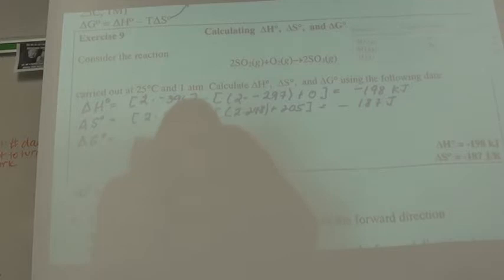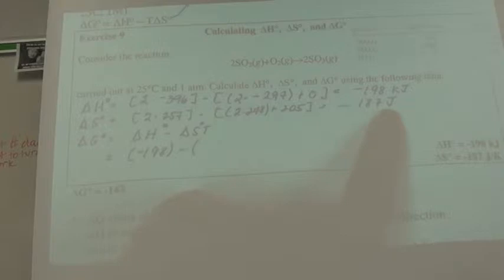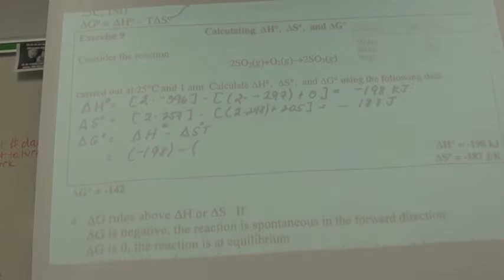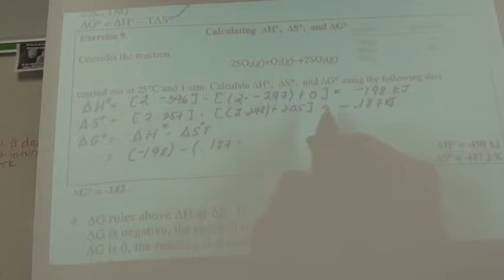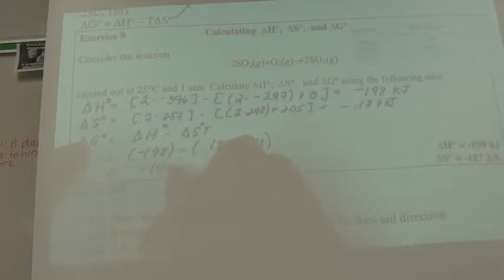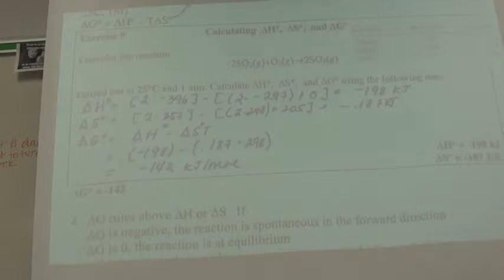And now it asks me to calculate delta G. Delta G is equal to delta H minus T delta S. So I have a negative 198 minus my delta S. And I notice that these values are different, and they must be the same in order to use the equation. I'm going to convert the entropy into kilojoules. So I'm going to divide it by 1,000. So this would be negative 0.187 times 25 degrees plus 273 is 298.